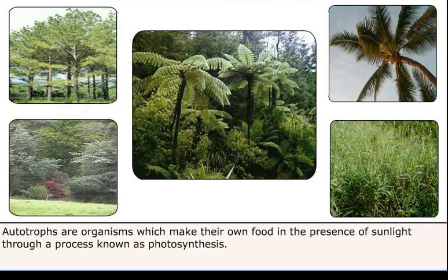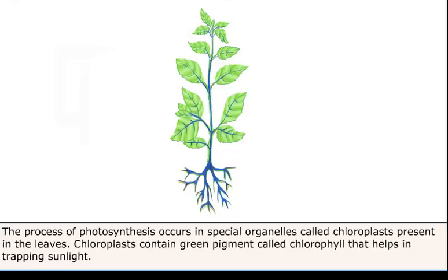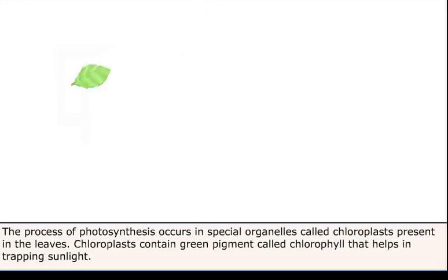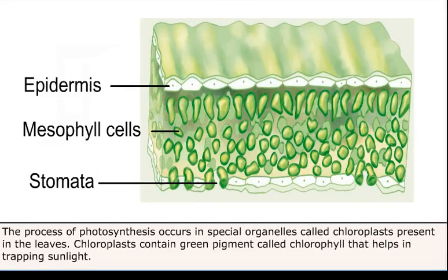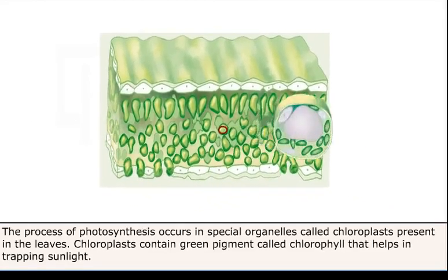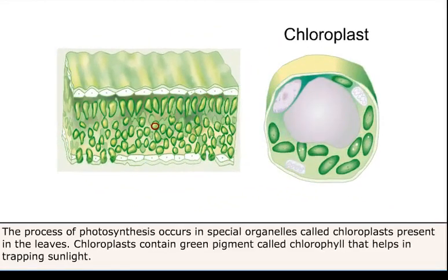Autotrophs are organisms which make their own food in the presence of sunlight through a process known as photosynthesis. The process of photosynthesis occurs in special organelles called chloroplasts present in the leaves. Chloroplasts contain a green pigment called chlorophyll that helps in trapping sunlight.